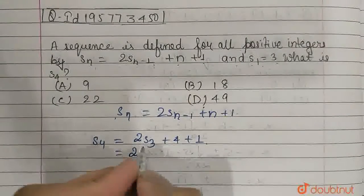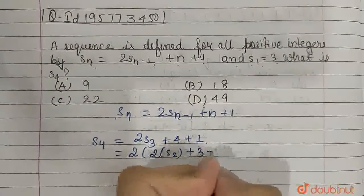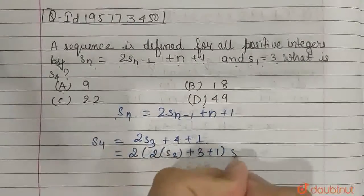Now s3 can be written as 2 times s2 plus 3 plus 1, and 4 plus 1 will be equal to 5.